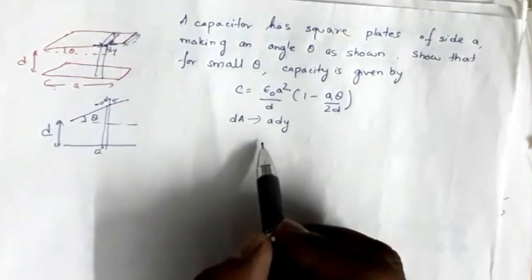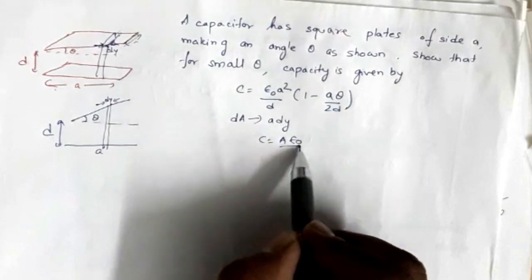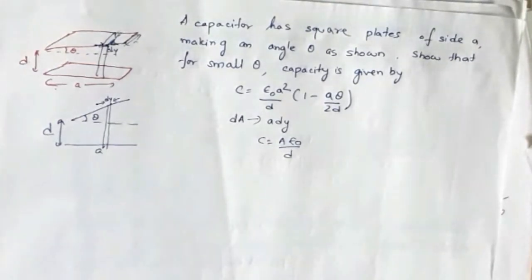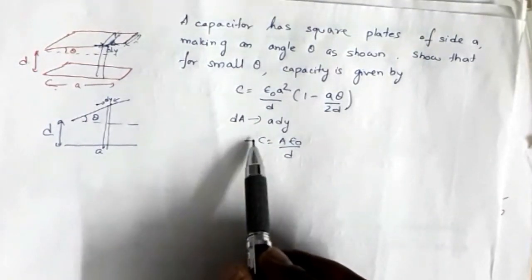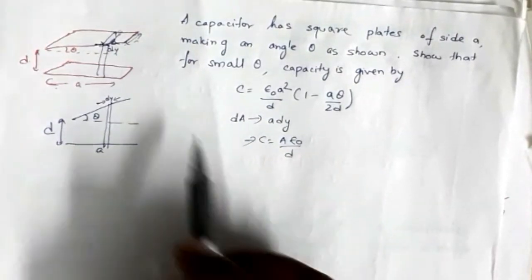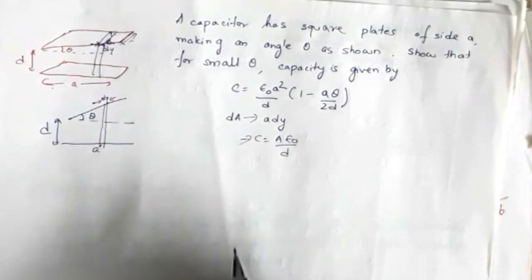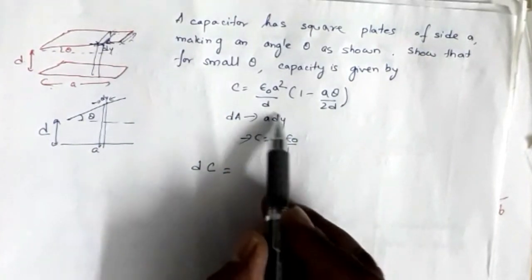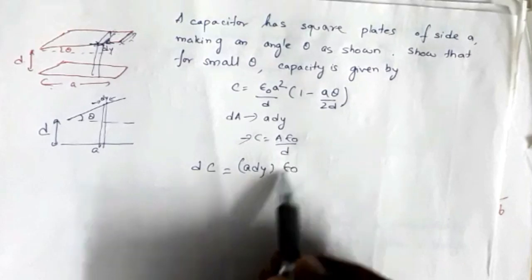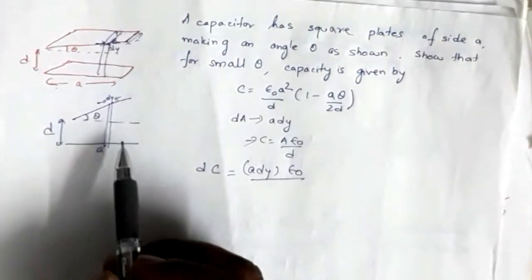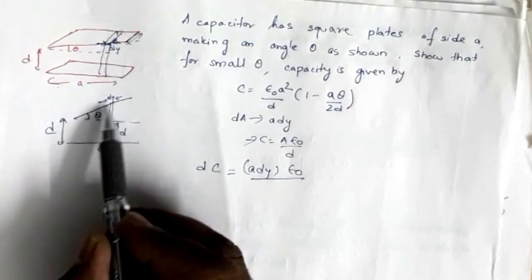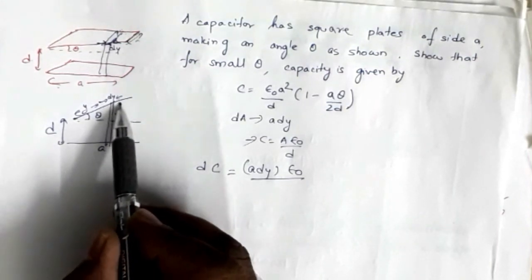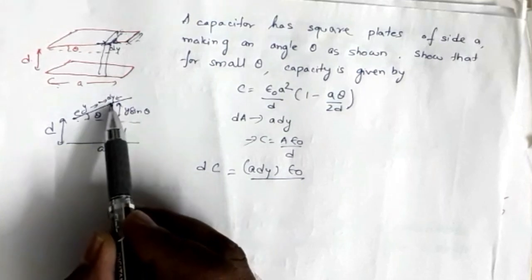The standard expression for capacitance of a parallel plate capacitor is C = Aε₀/d, where A is the area, ε₀ is the permittivity of free space, and d is the plate separation. Applying this to our differential element, the capacitance of the differential element is dc = a·dy·ε₀/d. Now this element is at distance y from one end, and since the plate is inclined at angle theta, the gap increases by y·sinθ, so the separation between the two elements is d + y·sinθ.